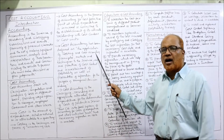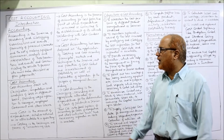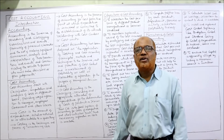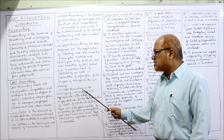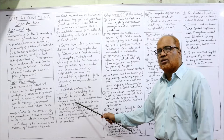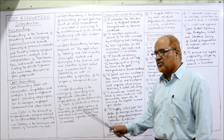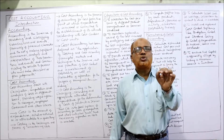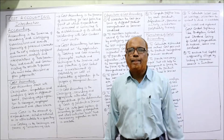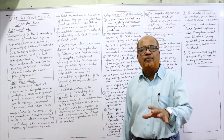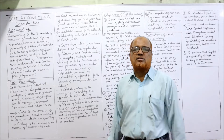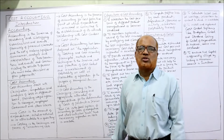Cost accountancy means costing and cost accounting principles and techniques applied to ascertain the cost — and ultimately to find out the profitability. Cost accounting is the classifying, recording, and appropriate allocation of expenditure for the determination of cost of products or services. Every business wants to find out how much cost is incurred to produce goods or provide a service, and cost accounting helps by recording and classifying that expenditure.